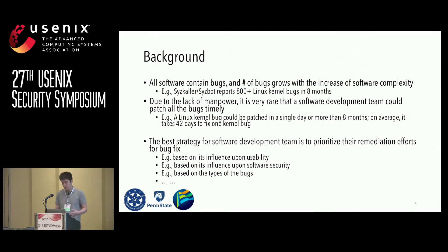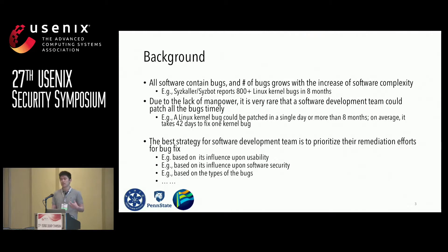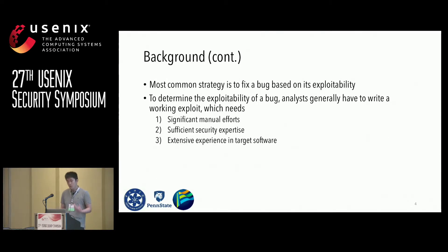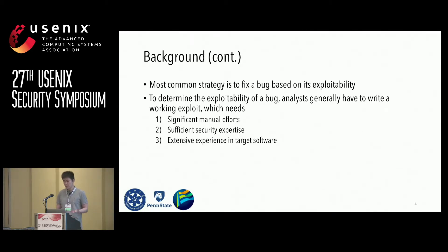For example, sometimes they prioritize bug fixes based on usability impact, sometimes based on security implication, and sometimes simply based on bug type. Of all these strategies, the most common one is to fix bugs based on exploitability. To determine the exploitability of a bug, analysts generally have to write a working exploit.